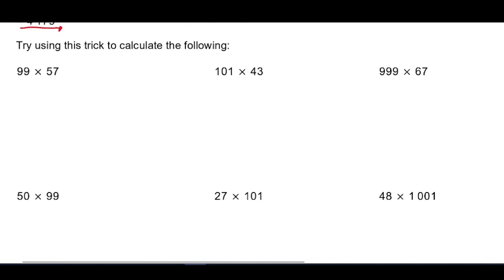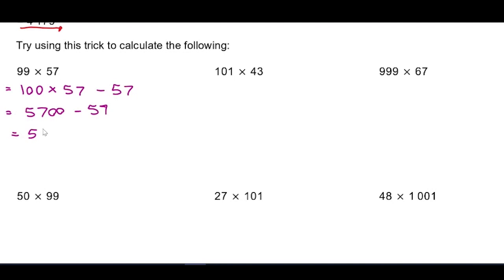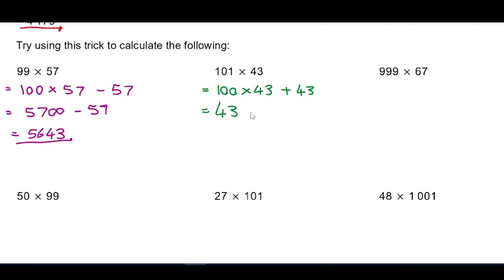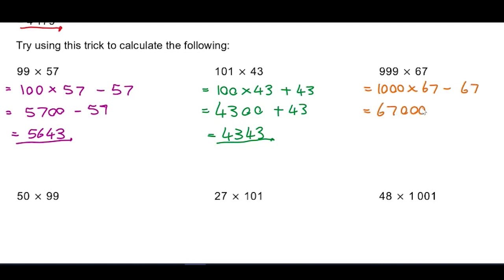Let's practice this trick. 99 × 57: that's 100 × 57 minus one lot of 57, so 5700 − 57 = 5643. Next, 101 × 43: that's 100 × 43 plus one more lot of 43, so 4300 + 43 = 4343. Then 999 × 67: that's 1000 × 67 minus one lot of 67, so 67,000 − 67 = 66,933.